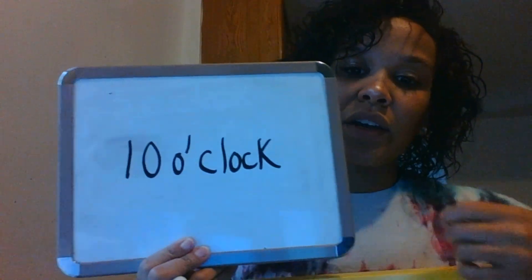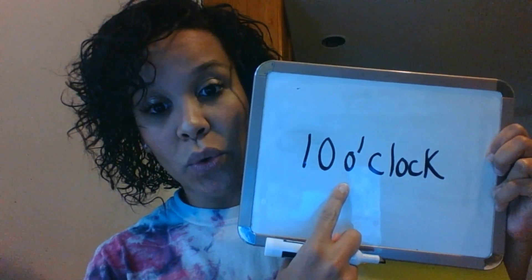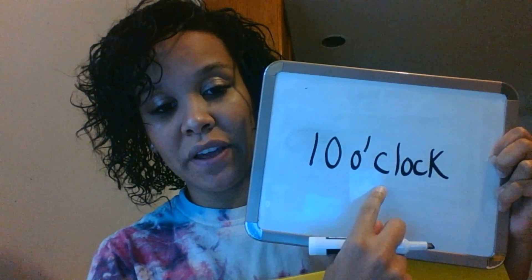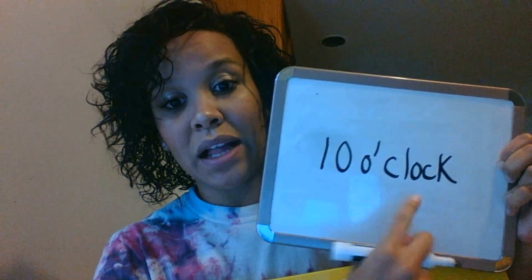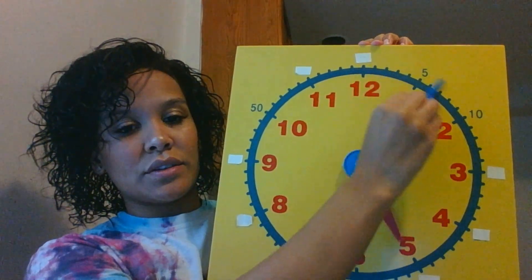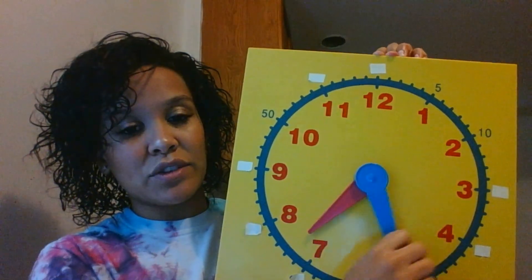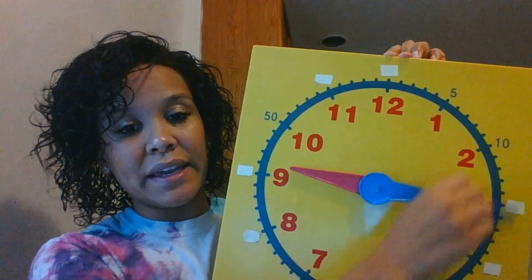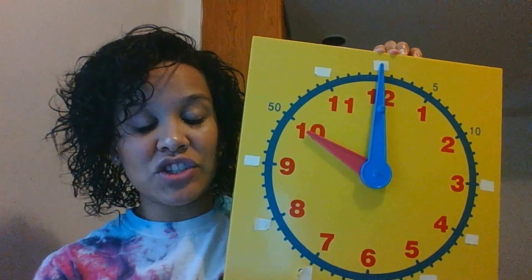Let me write this one down on my whiteboard so you can continue to see how it looks when we write it down. If I say find ten o'clock, that is how it will look — you write the number 10, the letter O, apostrophe, clock: ten o'clock. Now on my clock I'm going to find ten o'clock, moving my minute hand counterclockwise until my hour hand is touching the 10. This shows me, if I read it correctly, ten o'clock.